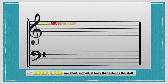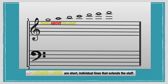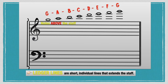Let's recognize the notes above the treble clef staff. On the space above the staff is G. The first ledger line is A. On the space above the first ledger line is B. On the second ledger line above is C, and on the space above the second ledger line is D. On the third ledger line is E, and the space above it is F. On the fourth ledger line above the treble clef staff is G. So above the staff: G, A, B, C, D, E, F, and G.